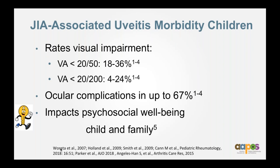Why do we care? Because uveitis is one of the higher causes of visual morbidity amongst children. Historically, rates of visual impairment were much higher before we could treat it — up to 25% of children had worse than 20/200 vision, and complications occurred in about three-quarters of individuals with JIA-associated uveitis despite it being asymptomatic. This greatly impacts the family, as kids are coming to the ophthalmologist very frequently and using eye drops or systemic agents, yet their peers and family can't see that anything is wrong.